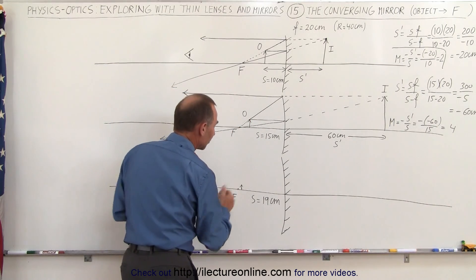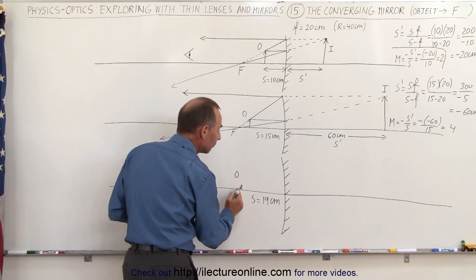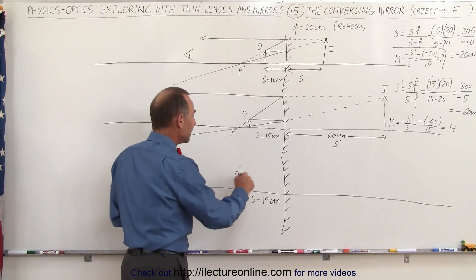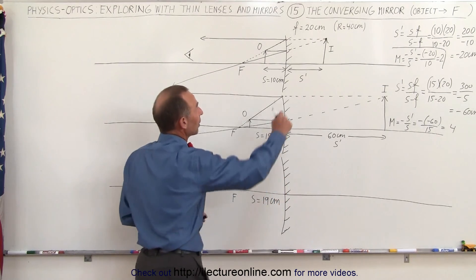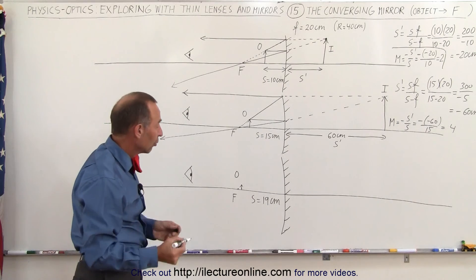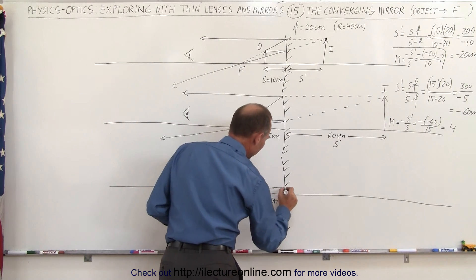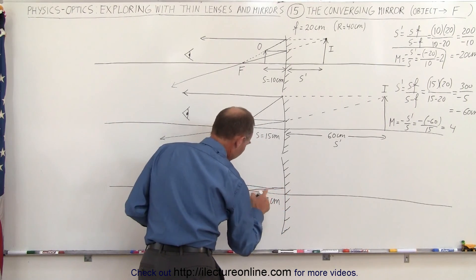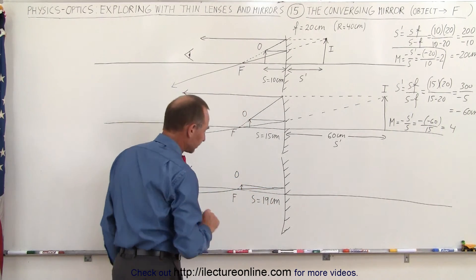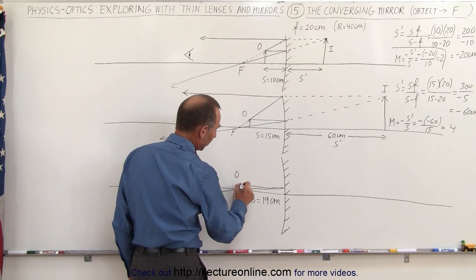Finally, we're going to place the object just one centimeter away from the focal point, between the focal point and the mirror, at a distance of 19 centimeters from the mirror, knowing that the focal point is 20 centimeters from the mirror. Here we have the focal length of 20 centimeters. To find where the image is located, we draw a line parallel to the optical axis until we hit the mirror; it then reflects through the focal point. The second ray is drawn as if coming from the focal point to the top of the mirror.